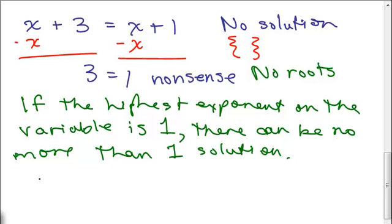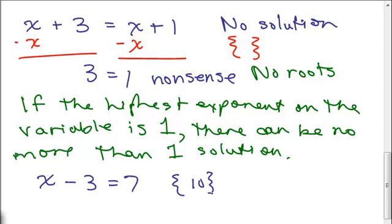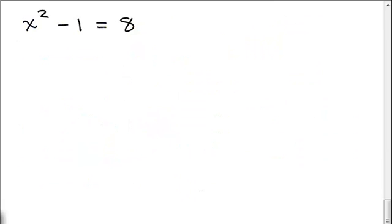Usually when solving linear equations you will get one solution, like X minus 3 equals 7. Just add 3 to both sides and the solution is 10. There's no way you're going to have two different numbers that make a linear equation work.